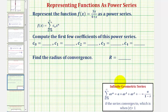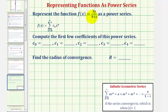We'll do this using what we know about infinite geometric series. If we have an infinite geometric series in this form, a is the first term and r is the common ratio. The series converges if the absolute value of r is less than 1, and it converges to a divided by the quantity 1 minus r. Because our function f(x) resembles this formula, we can use it to find the power series.